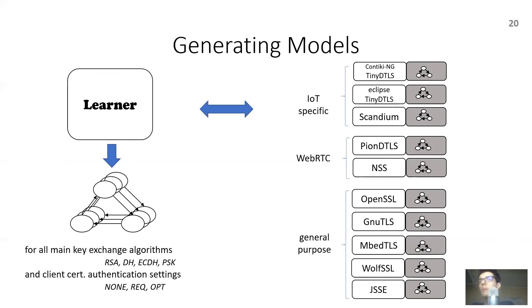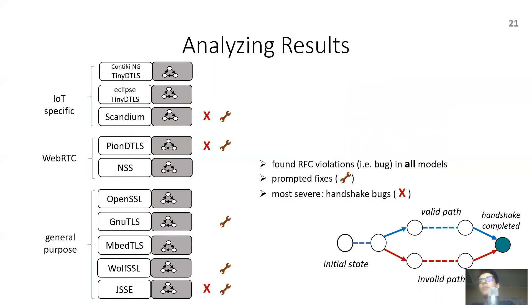We generated models for each implementation using different key exchange and client certificate authentication settings, then analyzed the models manually for bugs. Our analysis uncovered violations of the specification in essentially all the models generated. We reported many of these violations to the developers, prompting fixes in five implementations. The more severe violations are handshake bugs, which entail completing a handshake via an invalid sequence of messages. We'll discuss two of the more notable handshake bugs.